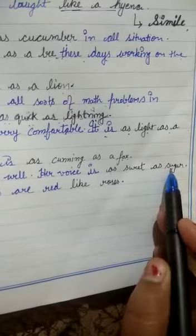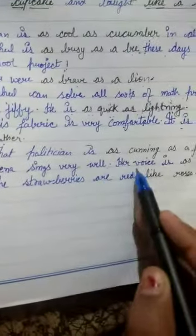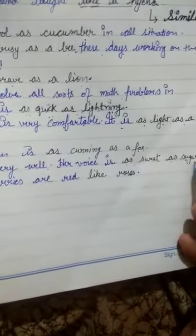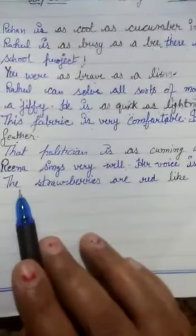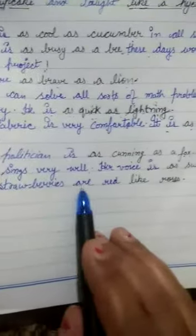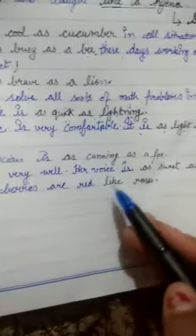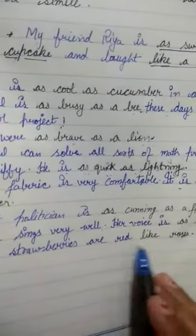Reena sings very well; her voice is as sweet as sugar. You can also say 'as sweet as a cupcake' since a cupcake is also sweet. The strawberries are red like roses — roses are red, so the strawberries are as red as roses.